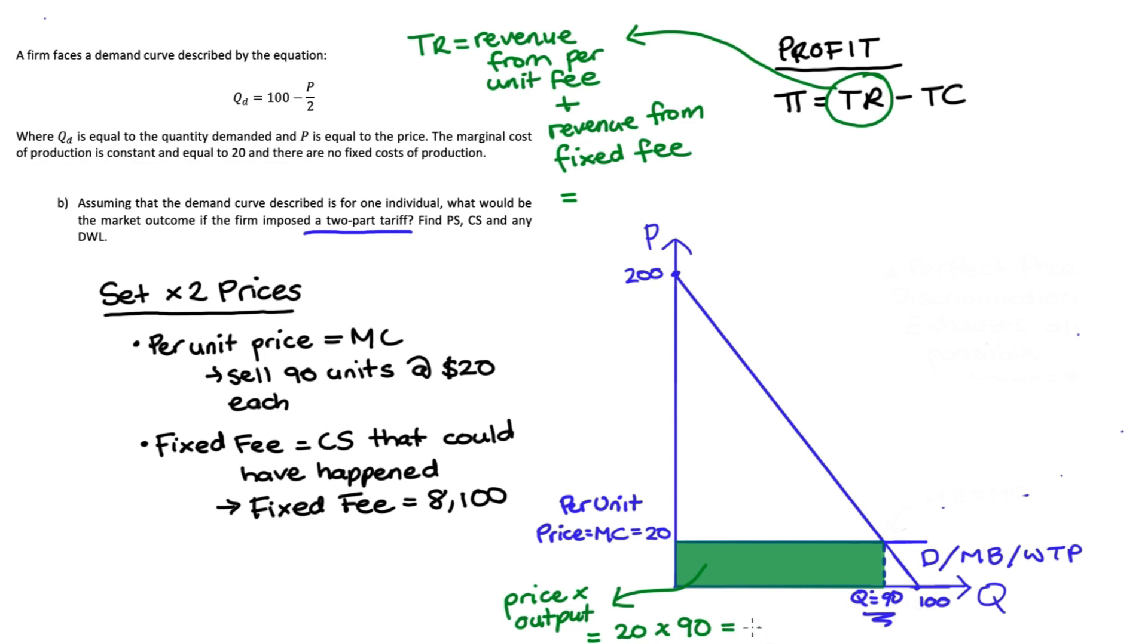The revenue from the per unit fee will be equal to the fee amount, which is 20, times the quantity, that's 90. Visually, it's this area down here, this rectangle, 20 times 90. That's 1,800. The fixed fee is 8,100, that triangle like I said before. The total revenue then will be 1,800 revenue plus the fixed fee, 8,100, this whole green area here.